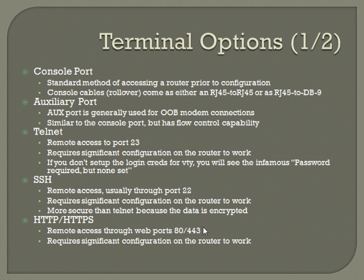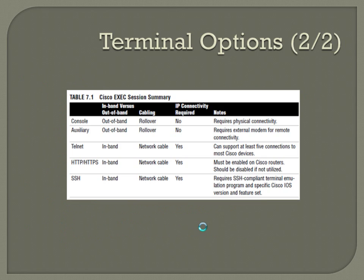The fifth method for accessing a router is HTTP or HTTPS — basically opening up a web port. Port 80 corresponds to HTTP and port 443 to HTTPS. This also requires significant configuration on the router. The book has a table — Table 7.1 — showing each of the various connection methods, including in-band versus out-of-band, cable type required, and whether IP connectivity is needed.